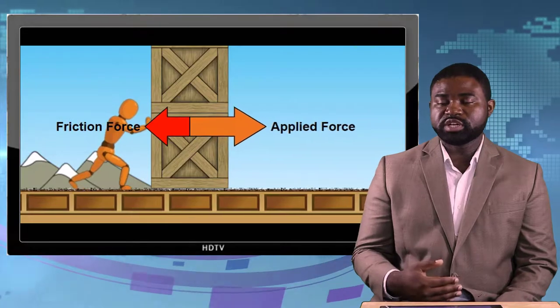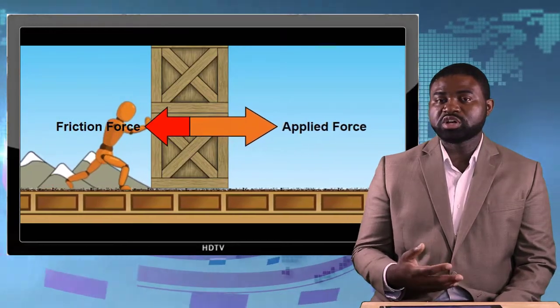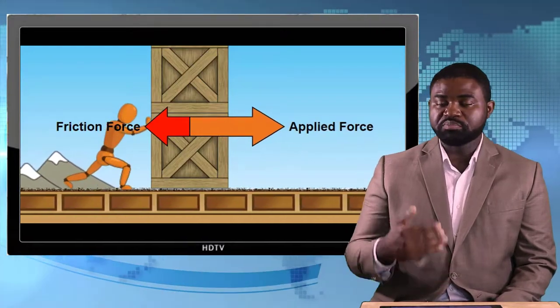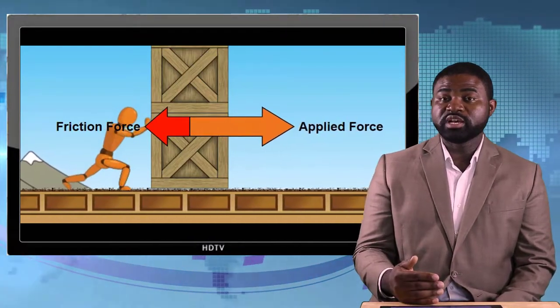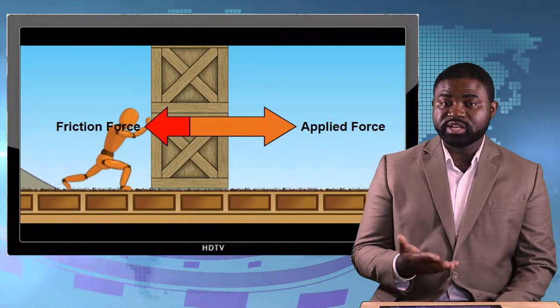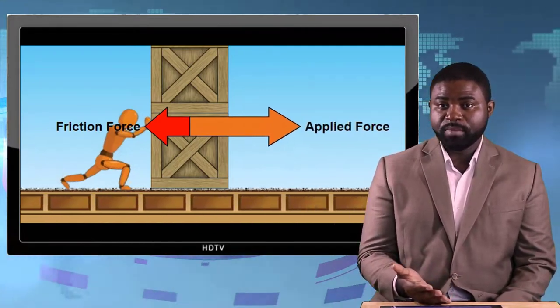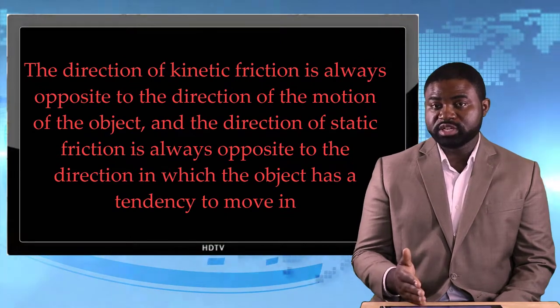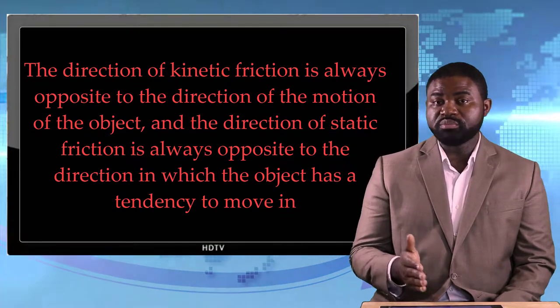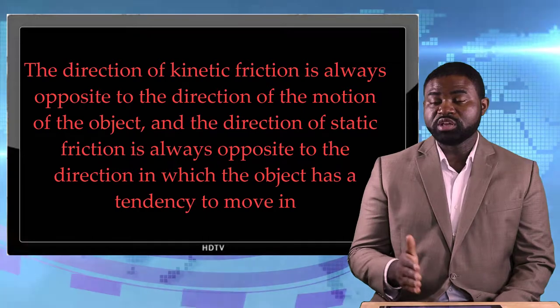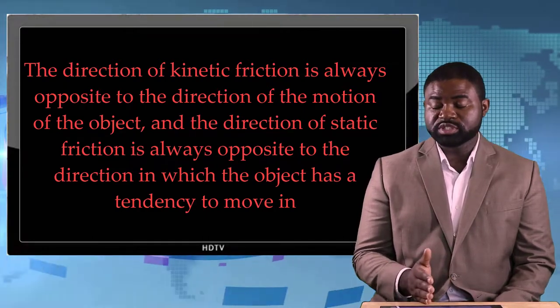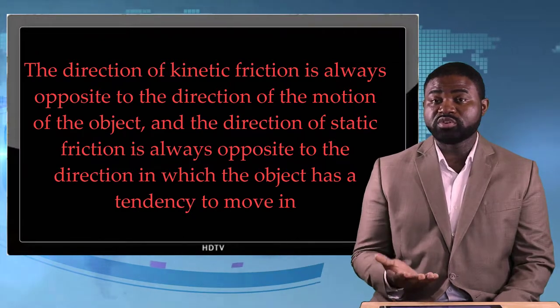So static friction really prevents objects from moving in the first place. Once the object begins to move, then dynamic or kinetic friction kicks in. So kinetic friction tends to prevent objects which are already in motion from being in motion. It tends to prevent objects or two surfaces in motion from sliding across each other.